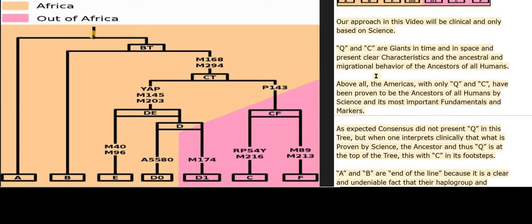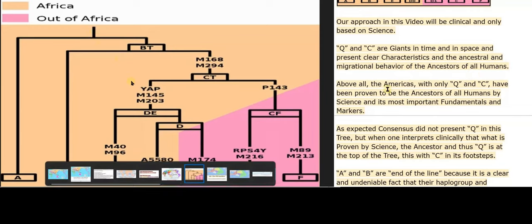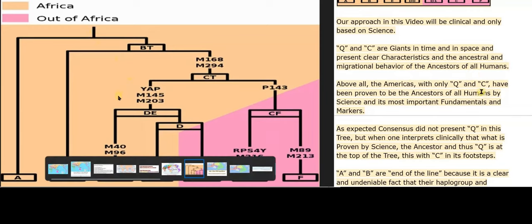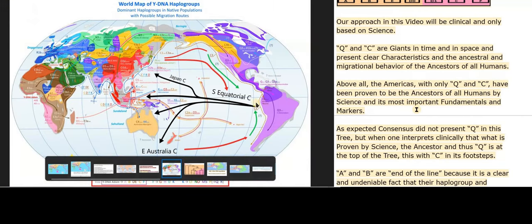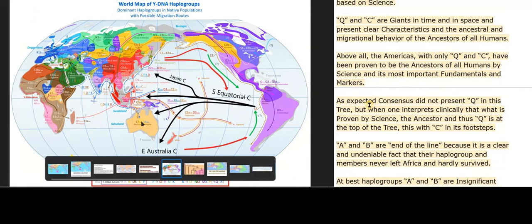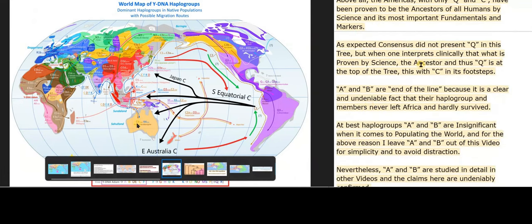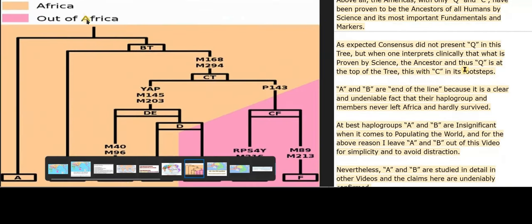Q and C are giants in time and in space and present clear characteristics and the ancestral and migrational behavior of the ancestors of all humans. Above all, the Americas, with only Q and C, have been proven to be the ancestors of all humans by science and its most important fundamentals and markers. As expected, consensus did not present Q in this tree, but when one interprets clinically what is proven by science, the ancestor and thus Q is at the top of the tree, with C in its footsteps.